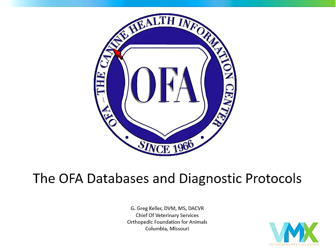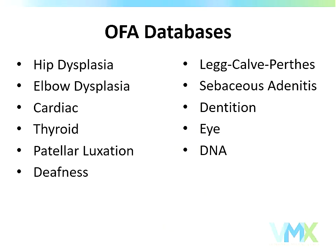I started with the OFA in 1987, so I've been there 32 years now. Looking back, when I started, the HIP database was the sole database. The elbow database started about 1990, and in the mid-90s we picked up the thyroid, the patella, and the cardiac databases. In the 2000s there's been an explosion — we inherited some databases from another registry, and right now the explosive diagnostic area is DNA tests, which are changing on a daily basis.